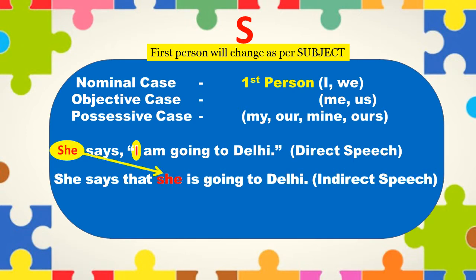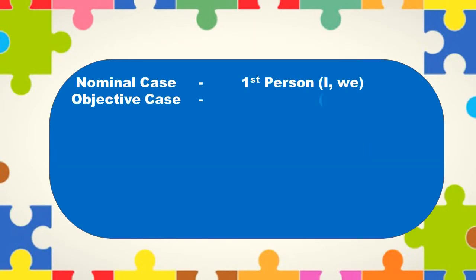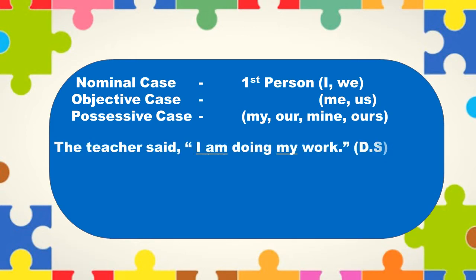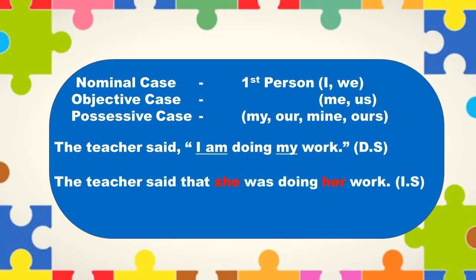Let us take one more example. In direct speech it is given: the teacher said, 'I am doing my work.' Here 'I' refers to the teacher. So 'I' and 'my' will change to 'she' and 'her,' and in indirect speech it will become: the teacher said that she was doing her work.